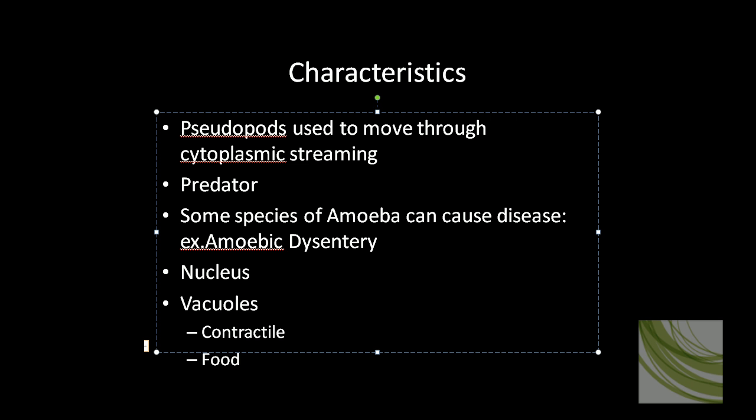They are primarily predators, although they are somewhat omnivorous. They can eat certain phytoplankton or microscopic plants. Some species are pathogens meaning they can cause disease, an example would be amoebic dysentery.